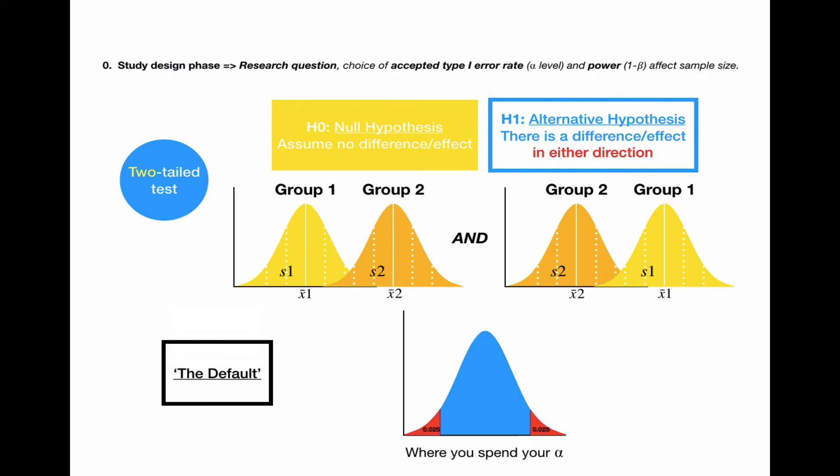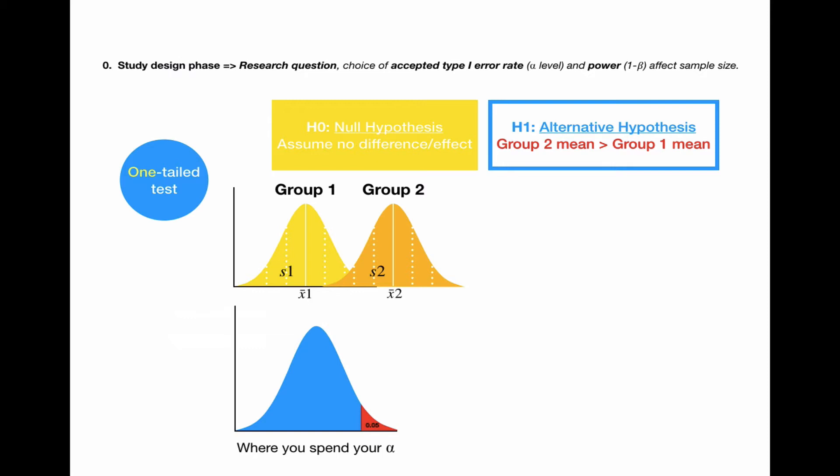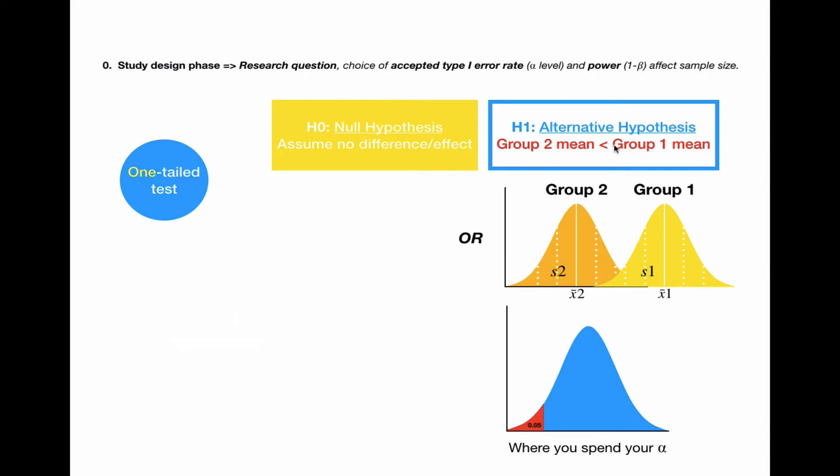But you can use a one-tailed test, and then you have to specify which direction you are interested in. So, for example, your alternative hypothesis here would be that group 2 mean is larger than group 1 mean, and we only spend our alpha on the right side of the curve. The alternative scenario would be that group 2 mean is lower than group 1 mean, and we spend our alpha on the left side of the curve.